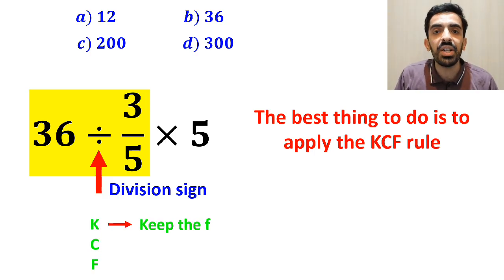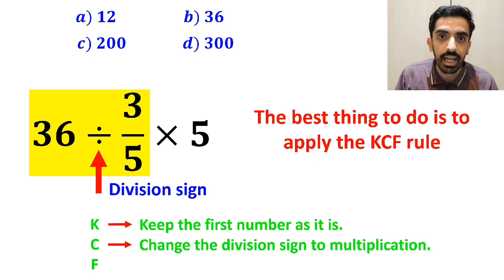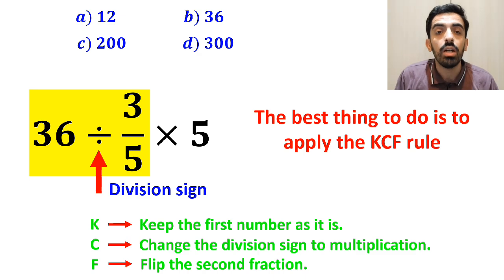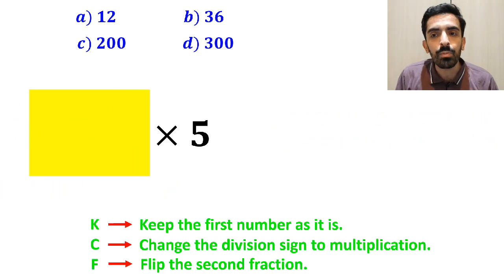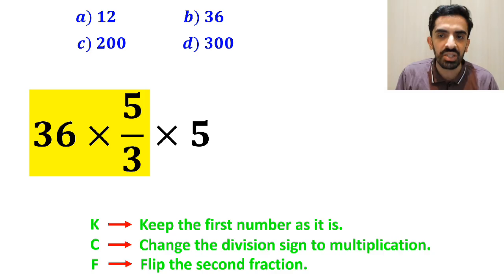In this rule, K stands for keep the first number as it is, C stands for change the division sign to multiplication, and F stands for flip the second fraction. So, we remove the highlighted part and rewrite this expression as 36 times 5 over 3 multiplied by 5.